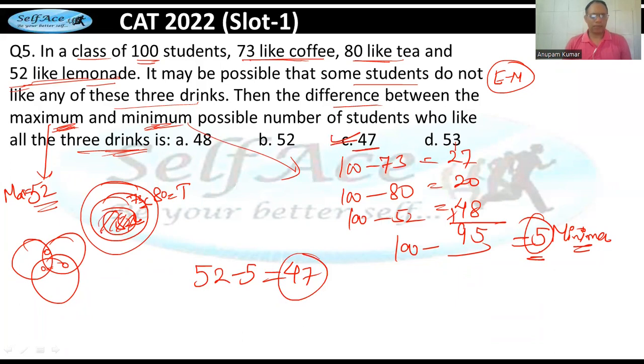Maximum ke liye aap yeh dekhiye ki maximum kaise nikal sakte hain. Because maximum lemonade hai, ho sakta hai ki jo chai peete hain, coffee peete, woh sare lemonade bhi peete hon. Maximum rakhte hain. Aur minimum ki case mein hum kya karte hain? Overlapping ko badhane ki koshish karte hain. There is a way to solve these questions. Agar aapko samajh nahi aa raha hai to bhi aap 100 mein se total mein se minus kariye, aise kariye unko add karke 100 mein se ek baar phir se minus kar dijiye. That's your minimum. So it is an easy question agar aapne set theory of Venn diagrams kiya hai to.